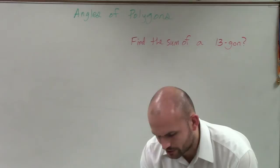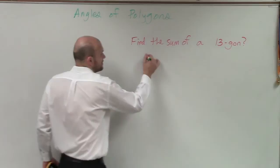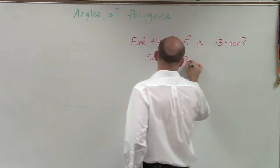So remember, our formula for the sum of the interior angles is simply n minus 2 times 180 degrees, where n represents the number of sides.